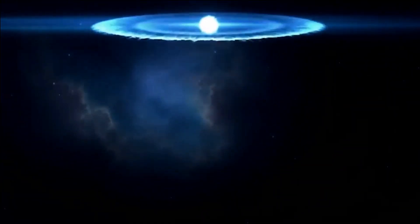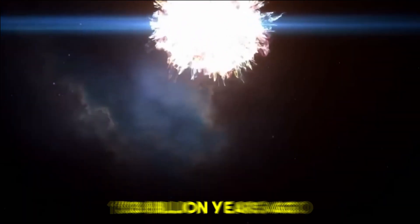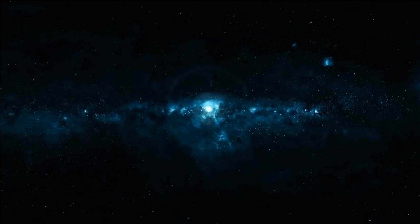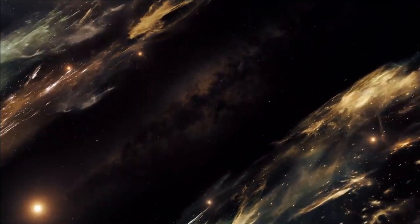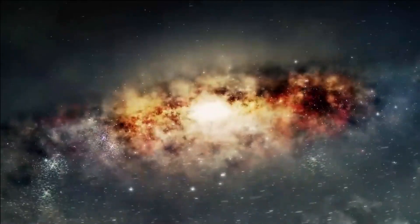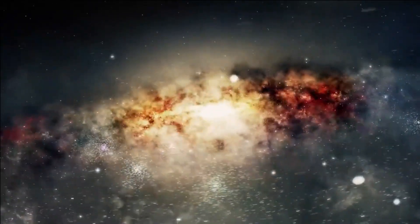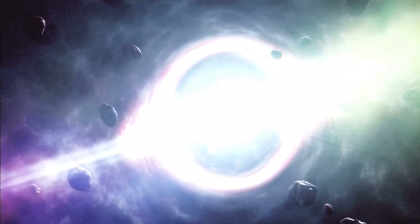To figure out how the universe would end, physicists have had to look at how it came to be in the first place. Some 13.8 billion years ago, a massive explosion occurred leading to the formation of the universe. At first, the universe expanded, but after a while, probably after a few milliseconds, it cooled and condensed into galaxies and all the stars and planets that are contained in them.